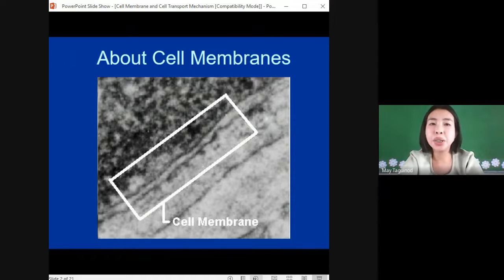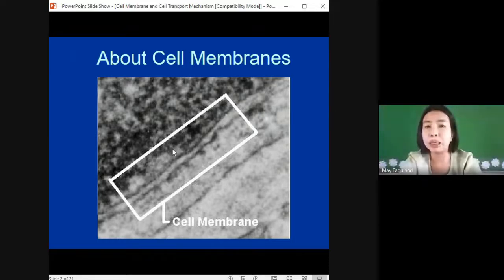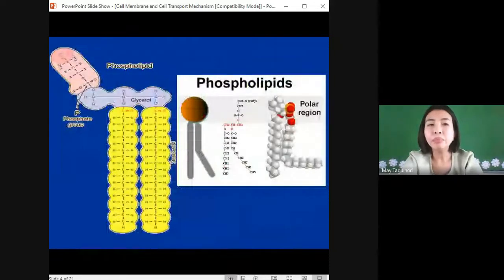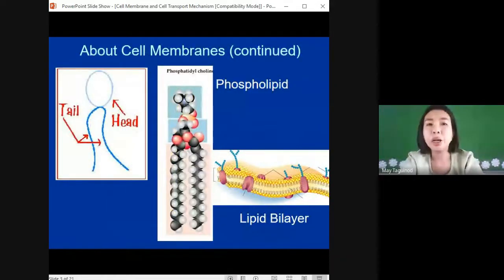So on your screen is a real picture of a cell membrane under transmission electron microscopy. The membrane has two layers of phospholipids. We have the phosphate head which is polar because they are hydrophilic or they love water, while the fatty acid tails or non-polar tails are hydrophobic or water-fearing. There are also proteins embedded in our cell membrane.